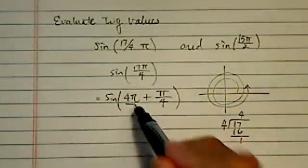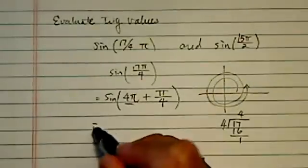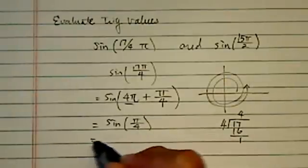So 4π is an even number of π, so the angle goes around the circle twice. This really is equal to sine π/4, which as you know is radical 2 over 2.